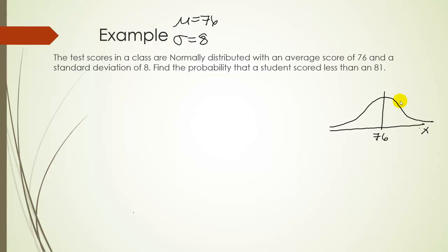We want to find the probability that x is less than 81. So 81 would be to the right of 76 over here. And since we want to find the probability that x is less than 81, let's shade to the left. So we want to find this probability.